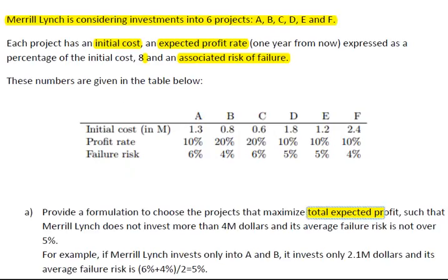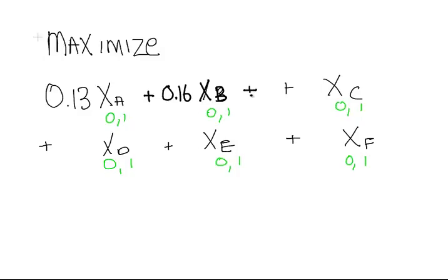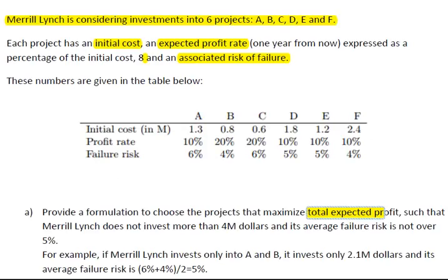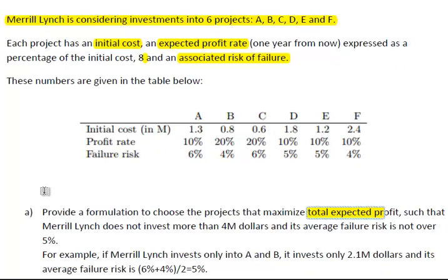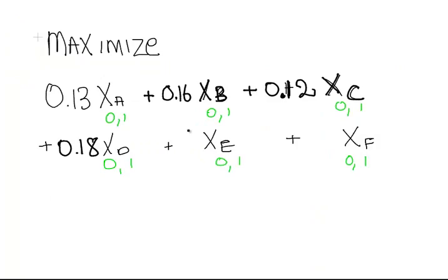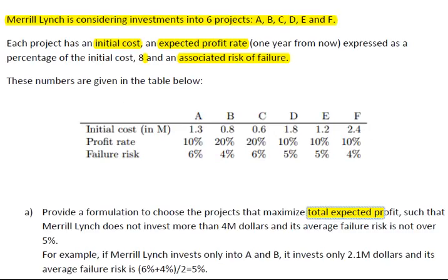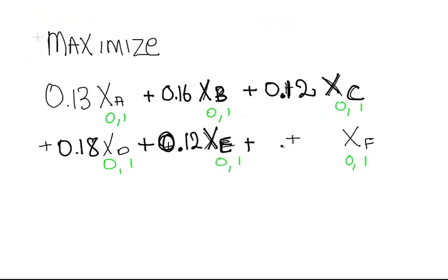The next one is 20% of 0.6, that's also 12, so plus 0.12xc. What we got then is 10% of 1.8, that's 0.18, 10% of 1.2 is 0.12, and finally 10% of 2.4, that's 0.24xf.